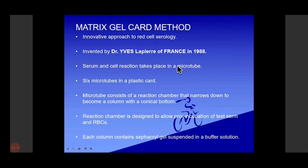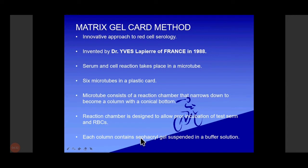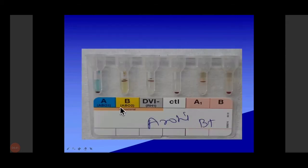Now we can see the matrix gel card method. It is an innovative approach to red cell serology, invented by Dr. Lapierre of France. Serum and cell reactions take place in a microtube. There are six microtubes in the plastic card. This microtube consists of a reaction chamber that narrows down to become a column with a conical bottom. Each column contains a sephacryl gel as the separation medium.